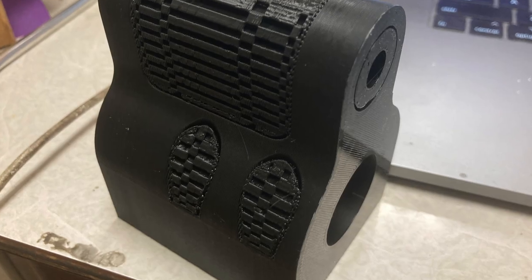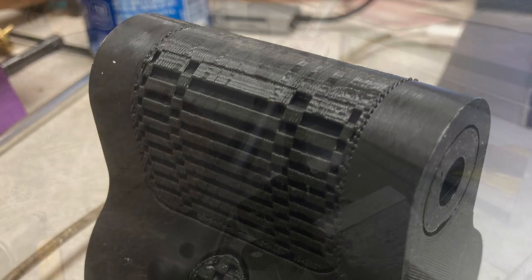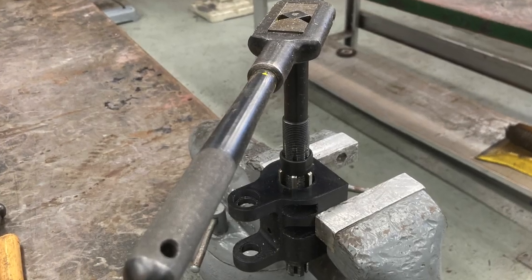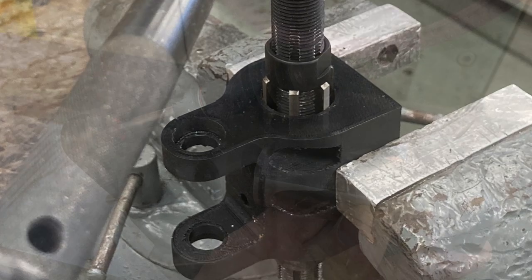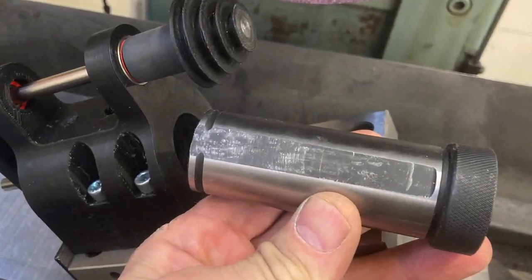After removing the rather stubborn support material I reamed the bore to 32mm for a sliding fit of the reduction sleeve.